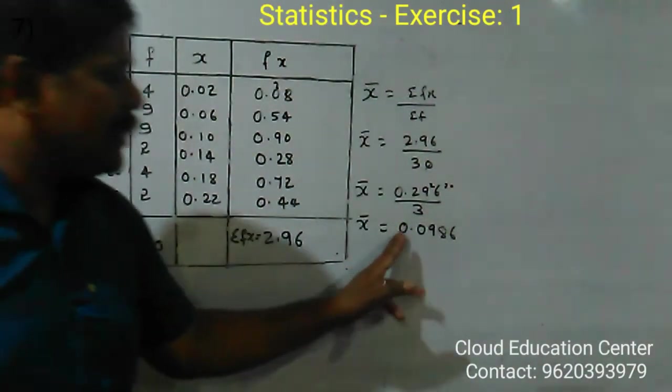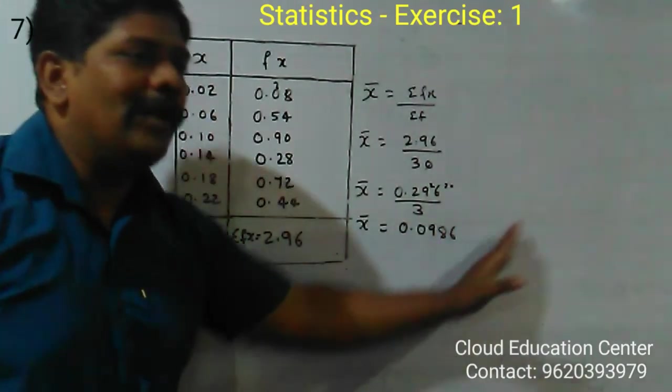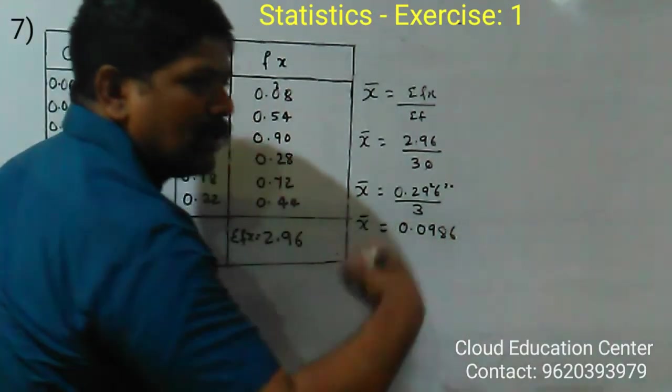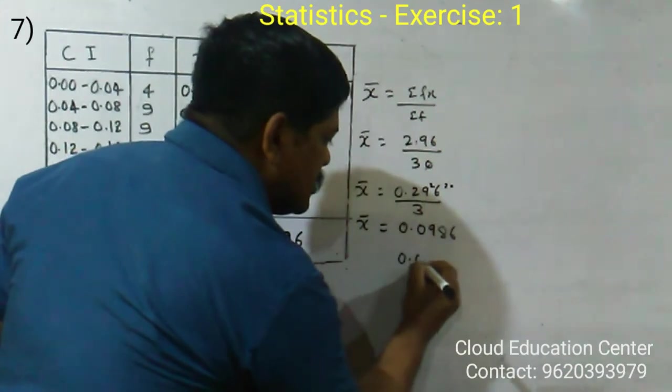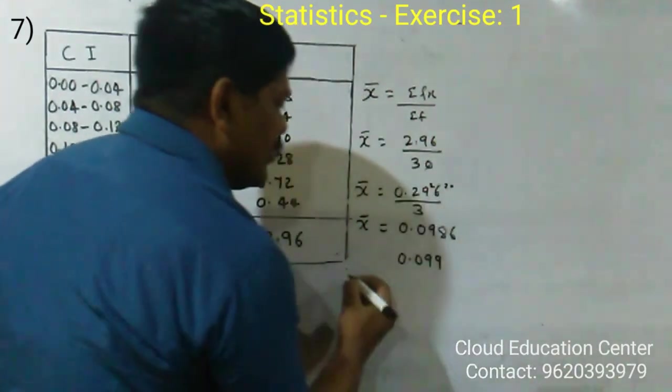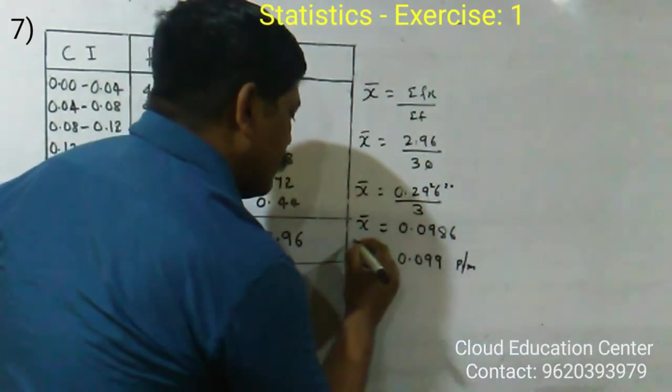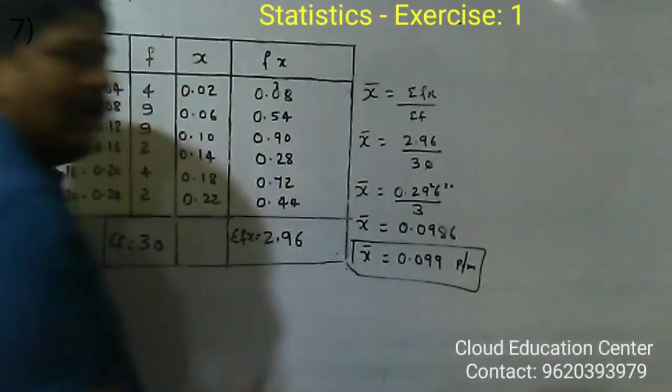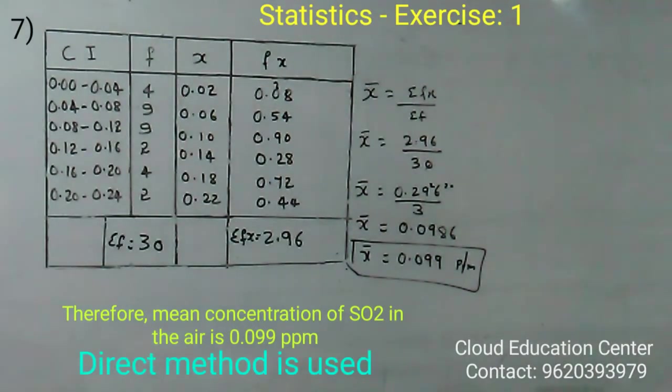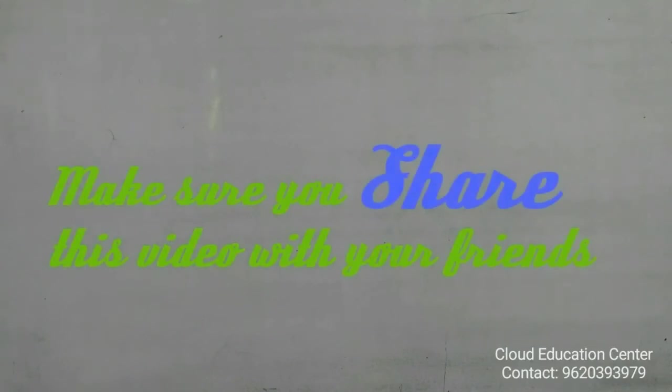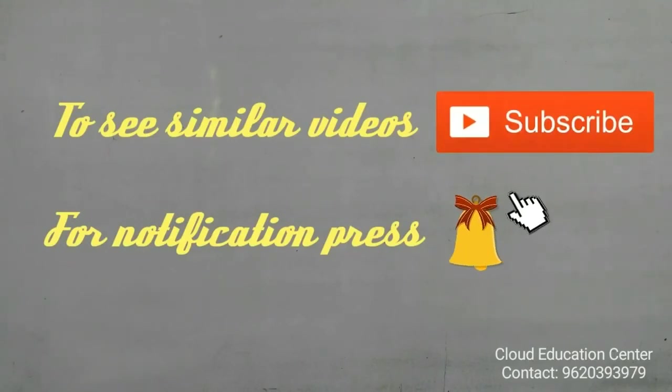It is 0.098. We will take a round figure. Since the value is more than 5, we take the approximate value as 0.10 parts per million. This is the mean value.